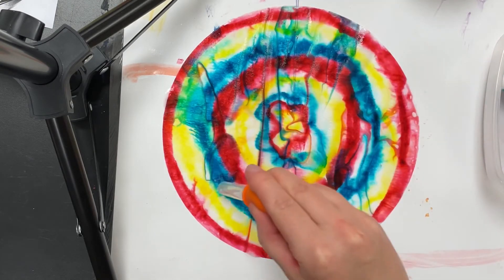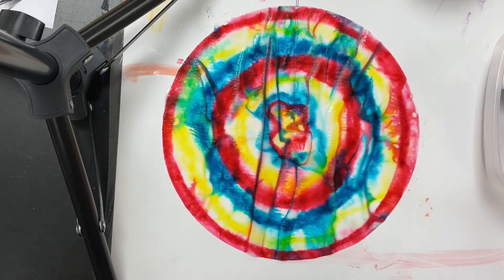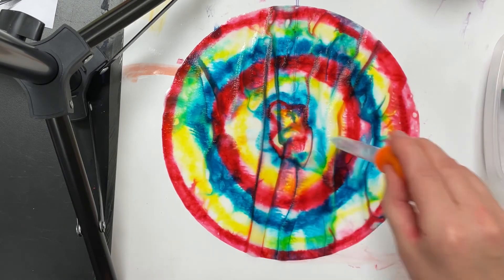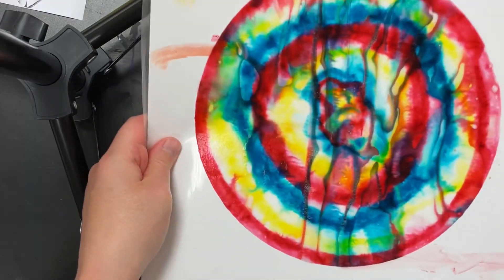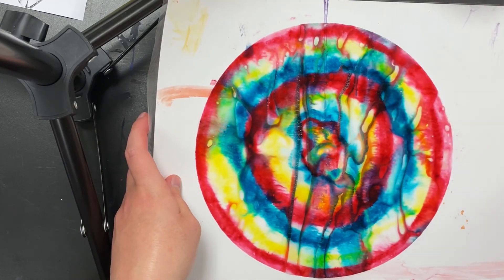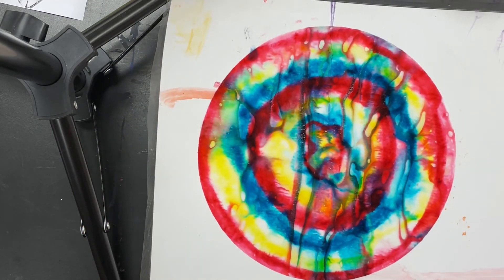Now you're going to notice some of your primary colors are mixing to make the secondary colors. I'm already seeing a little bit of green and orange and a little bit of purple too. When it's all done and covered with water, you don't want to pick up the circle itself - you want to pick it up with the placemat. That's how we're going to put it in the drying rack.